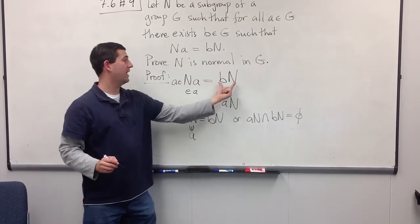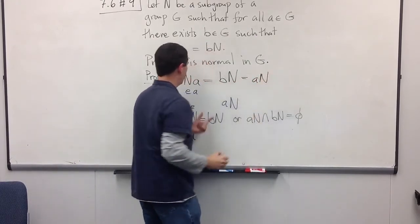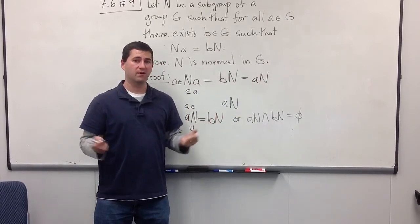So we can replace BN by AN, and since NA is equal to AN now for all A in G, our subgroup N is normal as well.